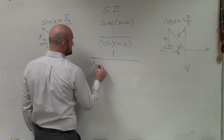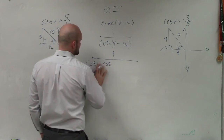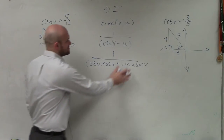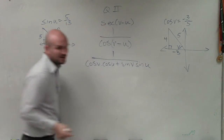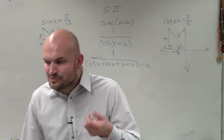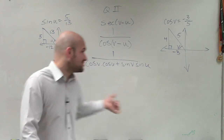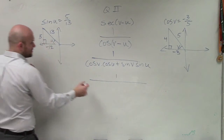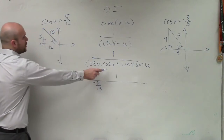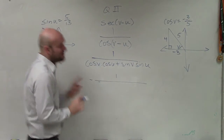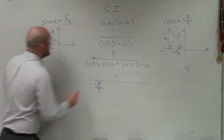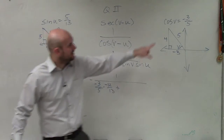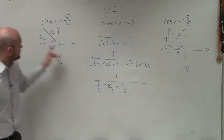So the corrected formula is: cosine of u times cosine of v, plus sine of u times sine of v. The cosine of v is negative 3 over 5. The cosine of u is negative 12 over 13. Plus the sine of v, which is 4 over 5, times the sine of u, which is 5 over 13.